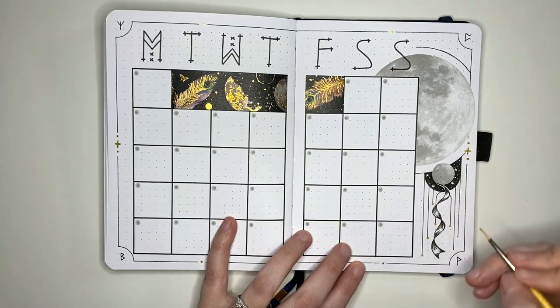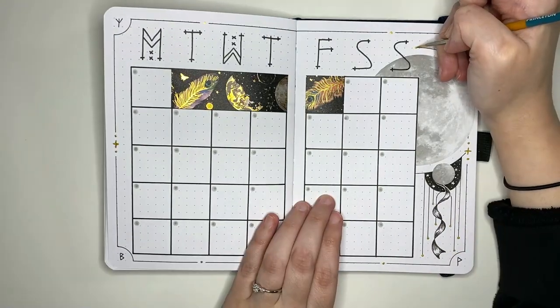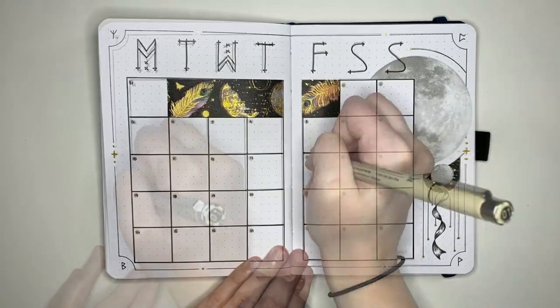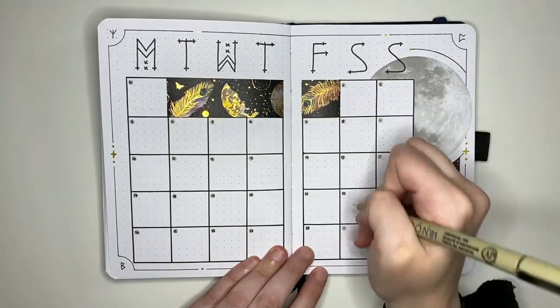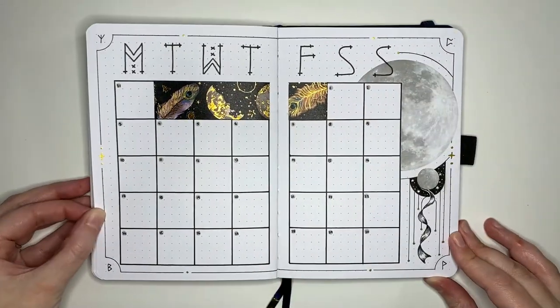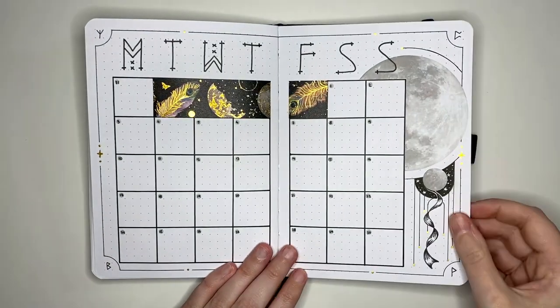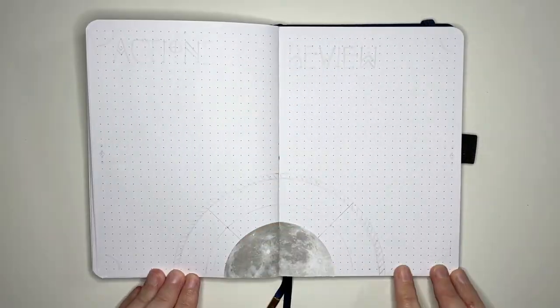Again the actual drawing out of it is fairly straightforward even if time consuming but looks really visually effective. In terms of timing from first touch the pen to final erasings the monthly log came in at 30 minutes making it the quickest spread to do in this setup.